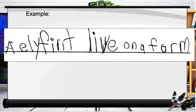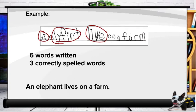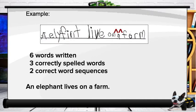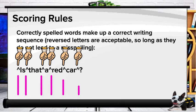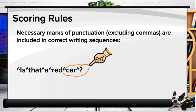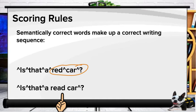Let's try with the sentence 'An elephant lives on a farm.' We've got six total words written, and circling incorrectly spelled words we come up with three correctly spelled words. Looking for correct word sequences — because they require correct syntax, spelling, and grammar — we end up with two correct word sequences. In the sentence 'Since is is correct, that a red car,' each of those words is correctly spelled and the syntax is correct, so we start the caret before 'is' and connect each correct word sequence for a total of six. Remember, necessary marks of punctuation excluding commas are included in the CWS count. In another example, all words are real and spelled correctly, but the syntax isn't correct — so it doesn't count. It also has to be semantically correct.